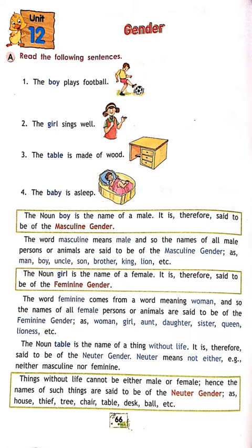Things without life cannot be either male or female. Non-living things come under neuter gender — remember, non-living things and neuter both start with 'N', so you can remember it that way. Hence, the names of such things are said to be neuter gender — as house, tree, chair, table, desk, wall, etc. There is no life for house, tree, table, or desk.